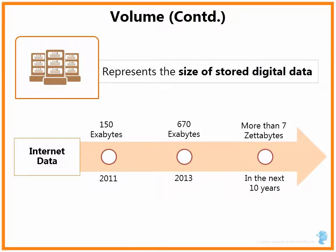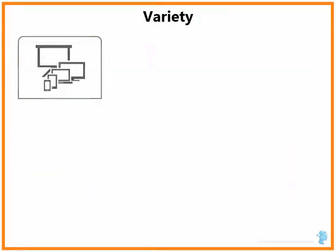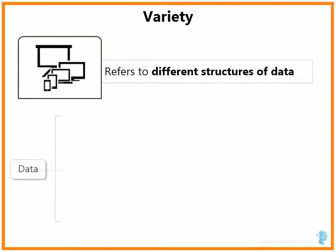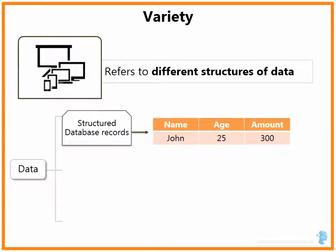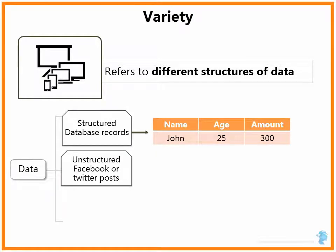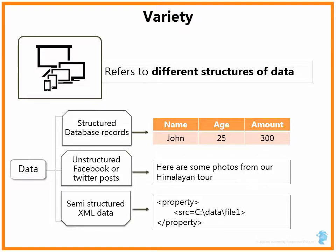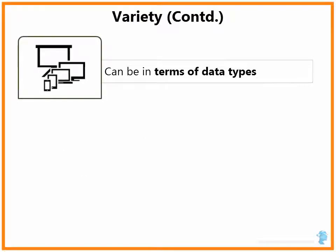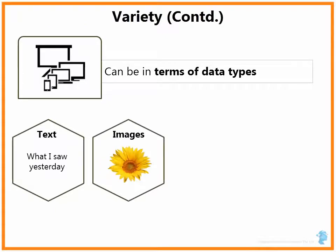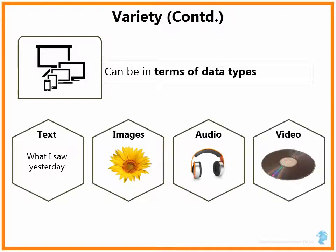Next up is variety, the second V, which refers to different structures of data. Data can be structured like relational database records — for example, a database record with name, age and amount. Data can also be unstructured like Facebook and Twitter posts, such as a text message posted on Facebook. Data can also be semi-structured like XML data, for example a configuration file that specifies property tags. Data variety can also be in terms of data types: simple text, images like photographs, audio like music and songs, or video like movies and events.